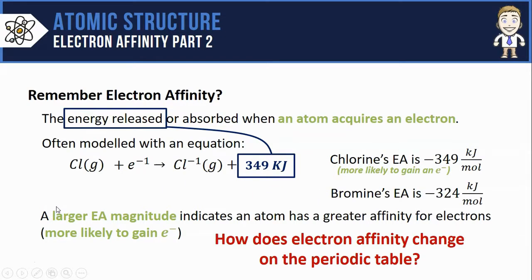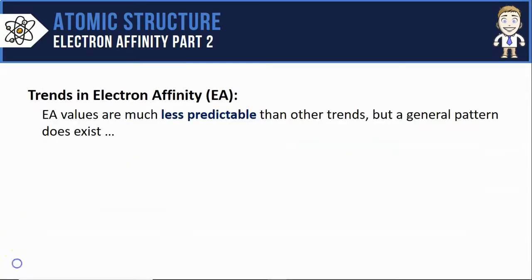In this video we're going to take a look at how this property of electron affinity changes on the periodic table. The trend in electron affinity is much less predictable than some of the other trends we've studied so far, but a general pattern does exist.